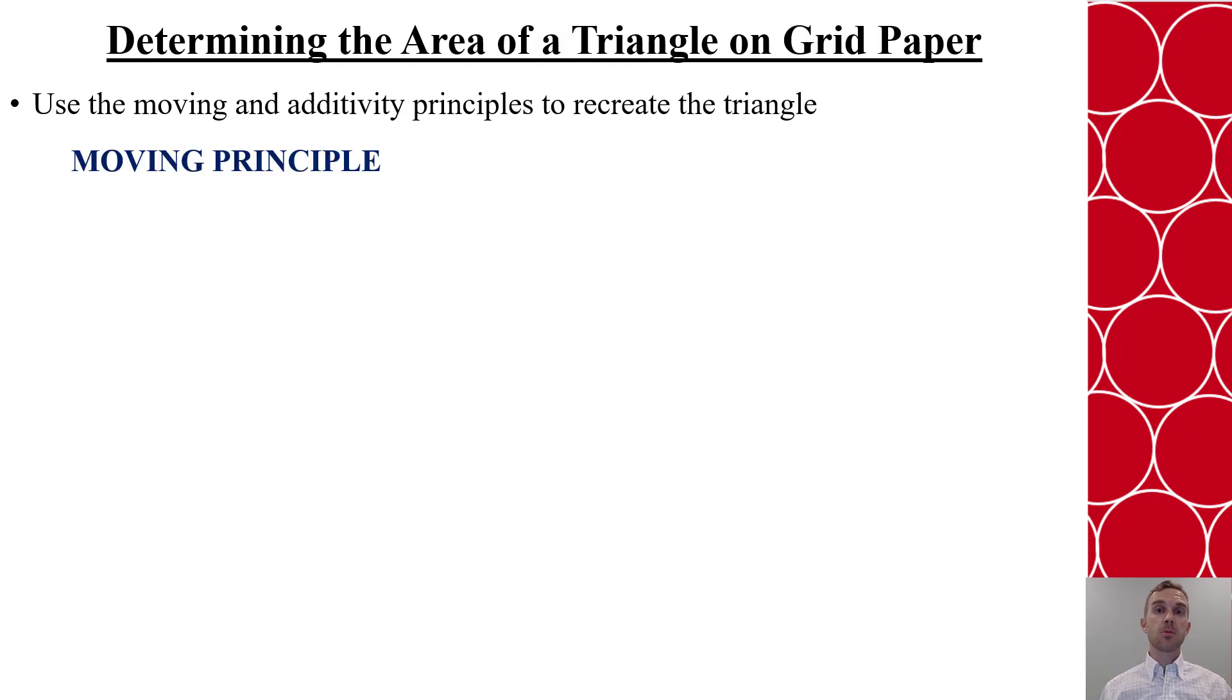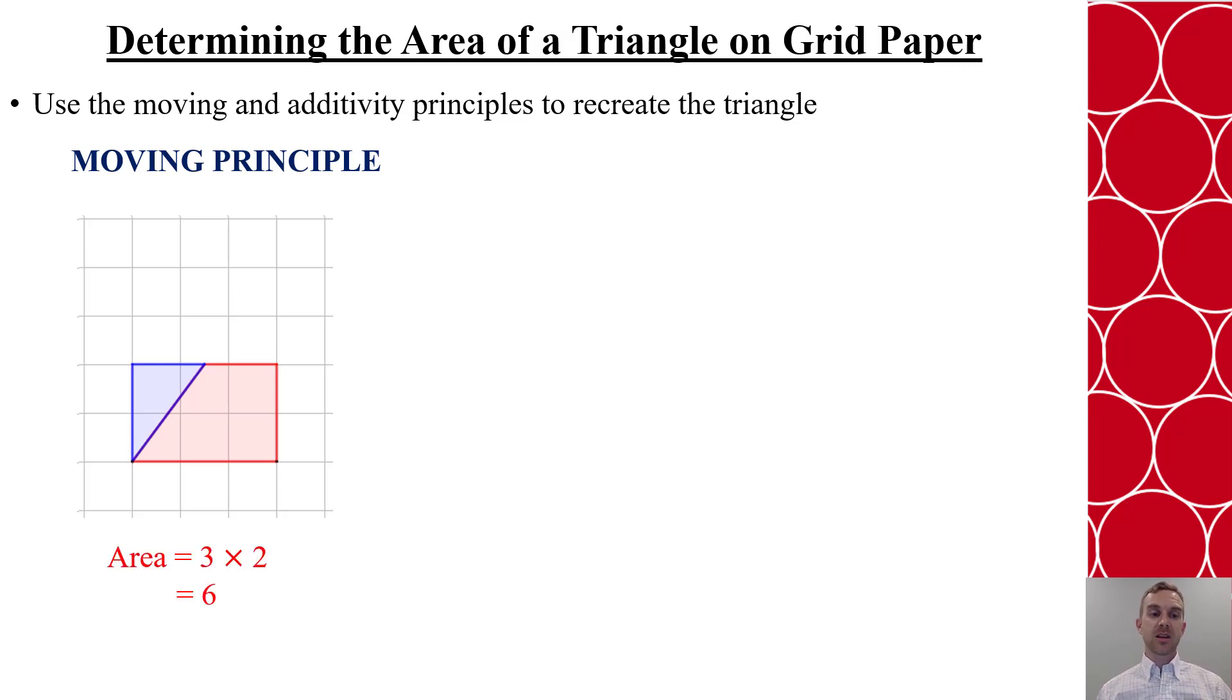For example, if I'm using the moving principle, I could look at this triangle that has a base of 3 units and a height of 4 units because of the right angle there. If I cut it off midway and take that piece and move it down into that opening, I can see that actually creates a 2 by 3 rectangle. I can find the area of that rectangle by doing length times width, so 3 times 2 equals 6.